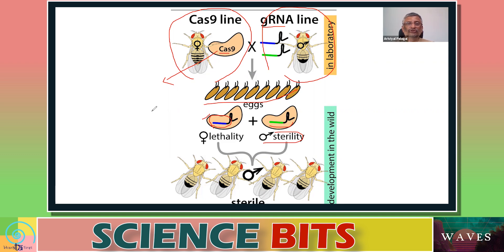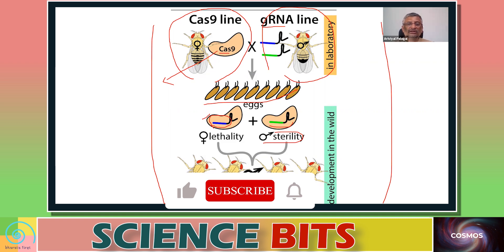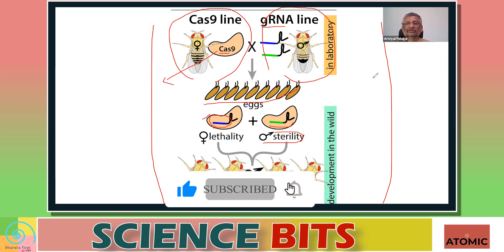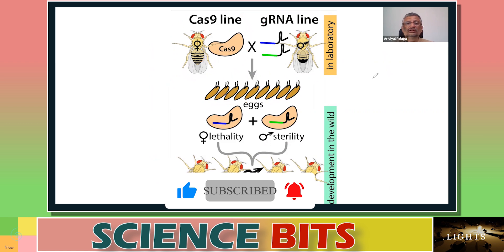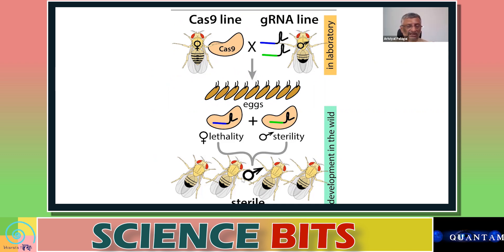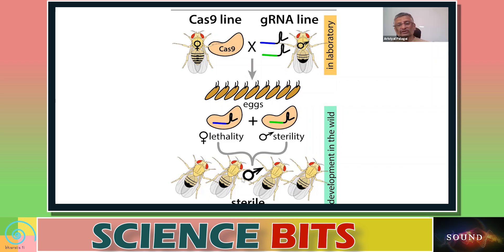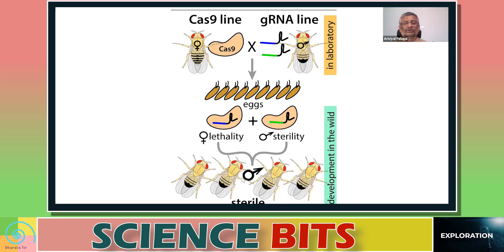These sterile male mosquitoes are produced in large numbers in the laboratory and then released into the wild. When these sterile males mate with natural female mosquitoes, the female offspring will not be able to fly and the male offspring will not be able to produce the next generation. This is how PGSIT is used to control the mosquito population.